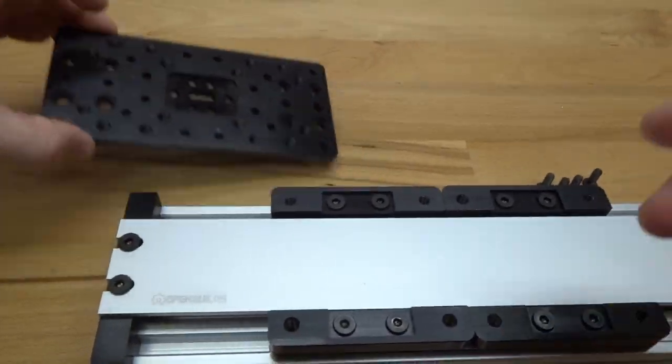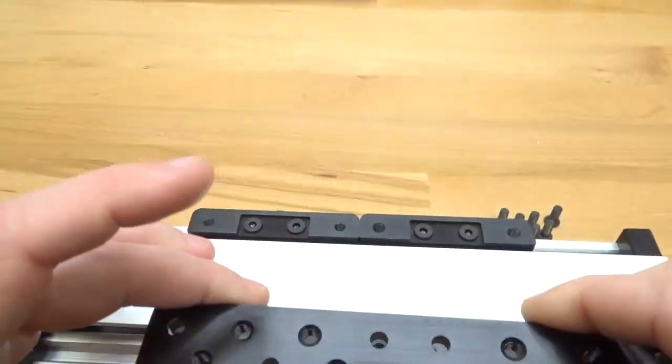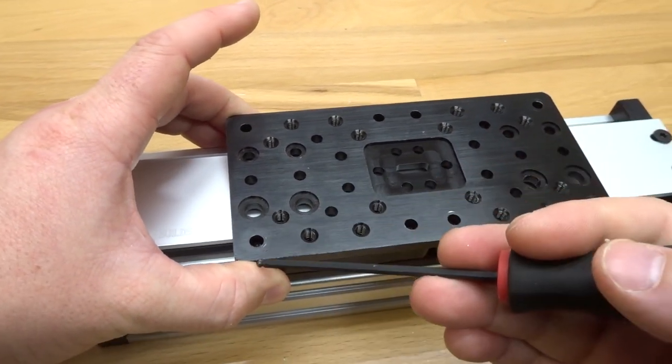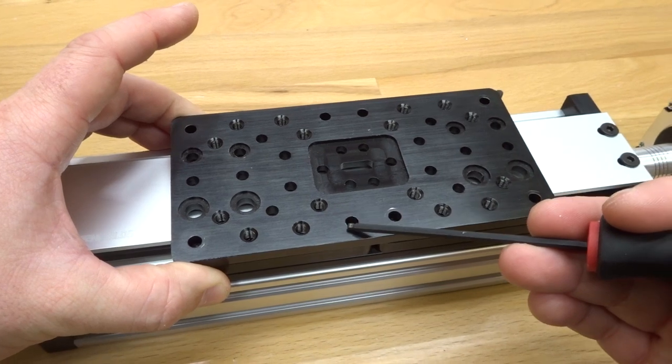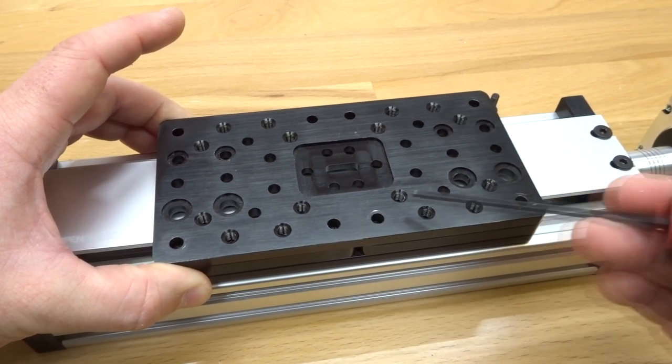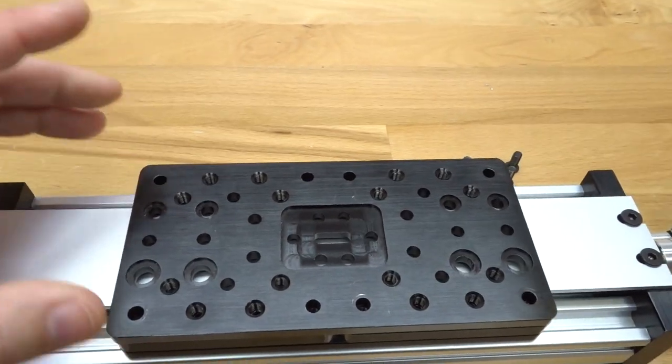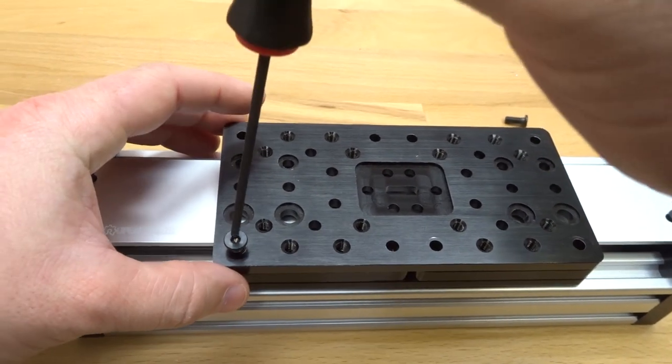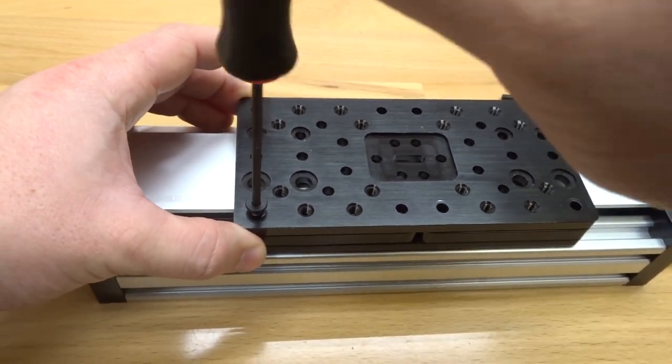From there we'll take our double wide gantry plate and stack it on top. From there we're going to assemble our screws to each one of these holes on our double wide gantry plate. Just follow suit with what I do - each 12 millimeter screw will insert and mount to the riser plate.